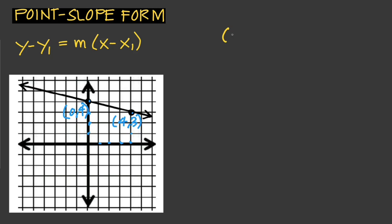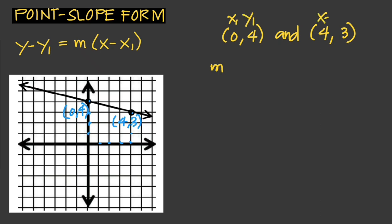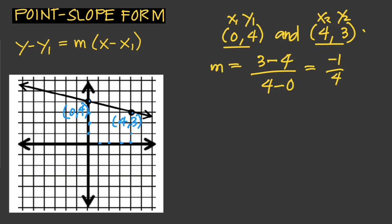Let's try another one. On this graph we have two points: (0, 4) and (4, 3). Solving for the slope: (y₂ - y₁) / (x₂ - x₁) = (3 - 4) / (4 - 0) = -1/4. Choosing point (4, 3), the equation in point-slope form is: y - 3 = -1/4 · (x - 4).